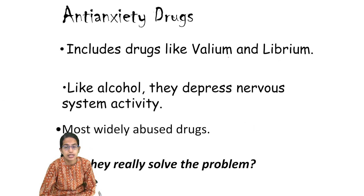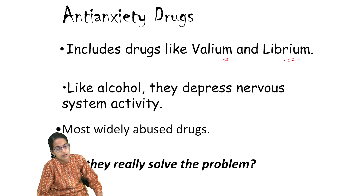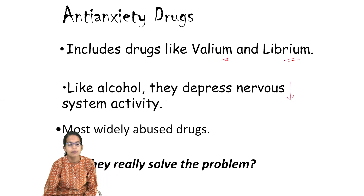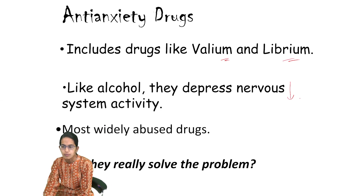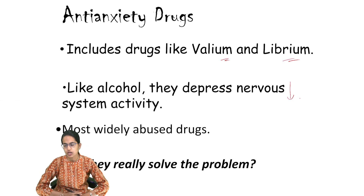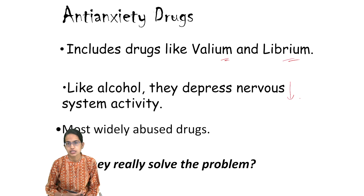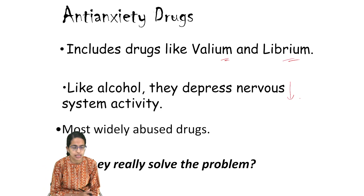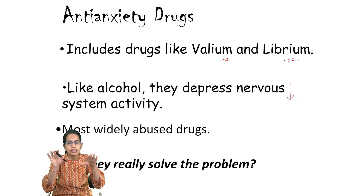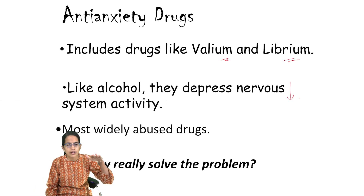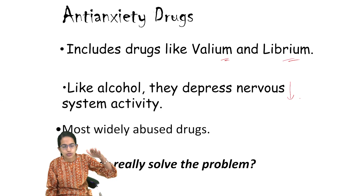Under anti-anxiety drugs, Valium and Librium are two important drugs. Similar to alcohol, they depress nervous system activity. They are the most widely abused drugs and actually don't solve the underlying problem. Side effects include drowsiness, dizziness, sedation, upset stomach, nausea, diarrhea, and dysfunctional sexual behavior. They depress the nervous system, making a person relax for a time period, thereby reducing the level of anxiety and stress.